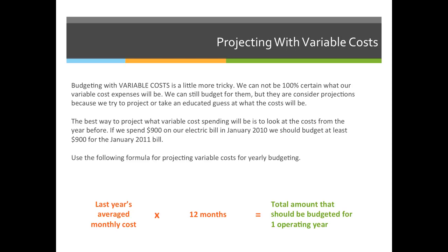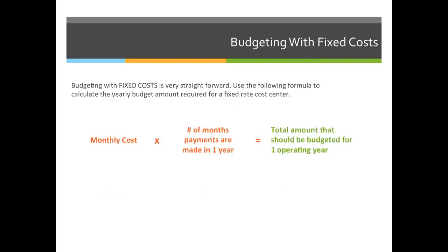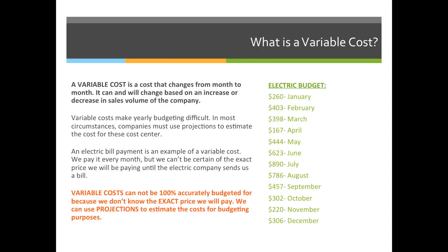So we're going to take an average monthly cost. Going back to our example of a variable cost, every single month we had a different electric bill. So we're going to average them out and say we spend about $500 every month on the electric bill. We do that by adding or summing up all the values and dividing by 12, since there are 12 months in a year.